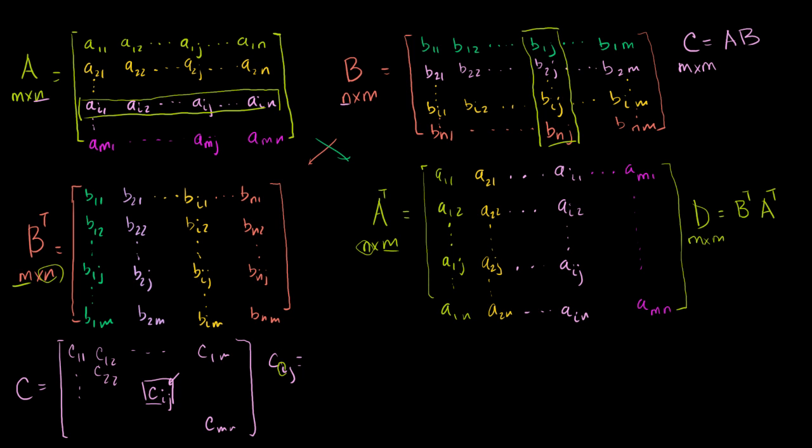And what's that going to be equal to? It's going to be equal to A_i1 times B_1j plus A_i2 times B_2j. And you're just going to keep going until you get to the last term here, A_in times the last term here, B_nj. Fair enough.